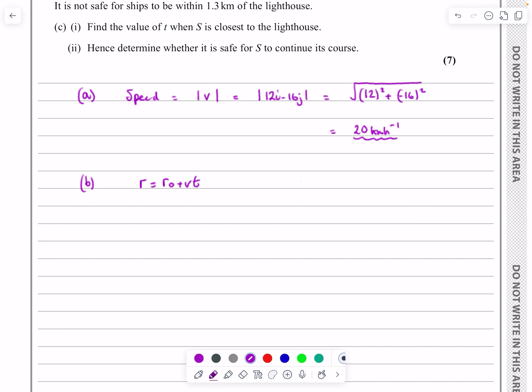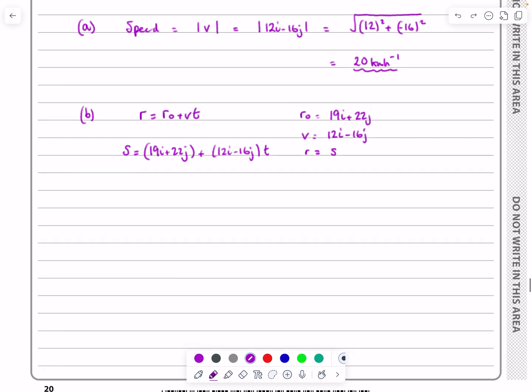So what have we got? We've got r0, where does it start off from? They told me it was 19i plus 22j. I've got the velocity, that's 12i minus 16j. And rather than saying r, they've asked us, so they've said r is equal to s here. So if I substitute all that work in, I'll get it for a general t. This is the sort of thing that they quite often do.